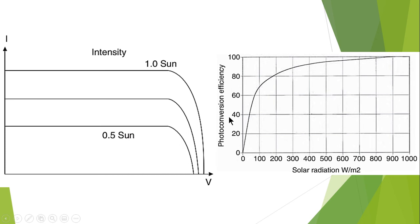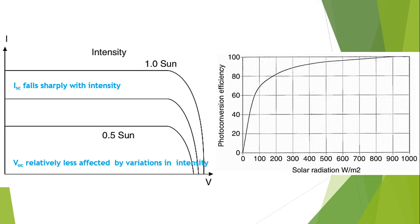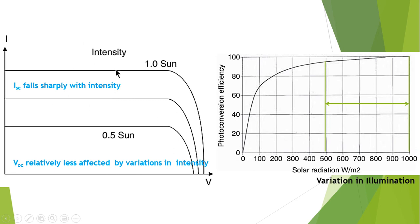This is the photo conversion efficiency curve for solar radiation from 0 to 1000 watts per meter squared, and the curve increases with increasing solar radiation levels. The short circuit current falls sharply with intensity, whereas the open circuit voltage Voc is relatively less affected by variation in solar intensity. The voltage remains almost constant, but the current values are relatively reduced with fluctuations in solar intensity levels.